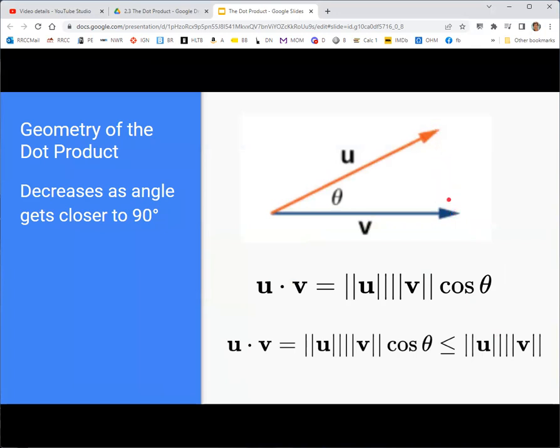So if we imagine going from u and v pointing in the same direction to now there is some angle between them, now we have that cosine of theta, which is less than 1. And so it's going to be something less than the magnitude of u times v, right? u times v times some number less than 1. This is going to be a little bit smaller than if they were pointed in the same direction.